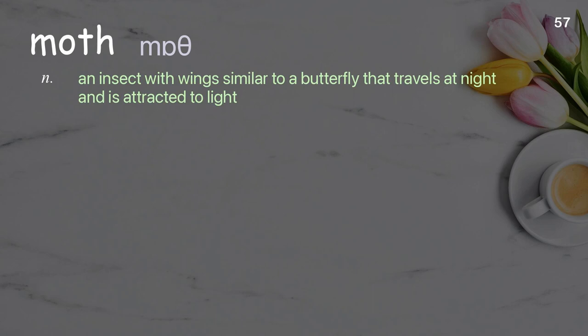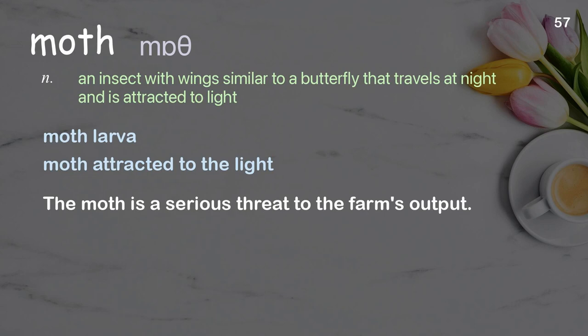Moth: an insect with wings similar to a butterfly that travels at night and is attracted to light. Examples: moth larva; moth attracted to the light; the moth is a serious threat to the farm's output.